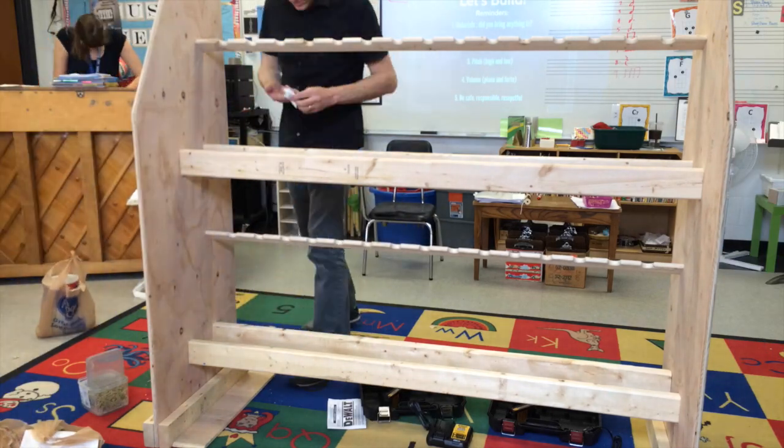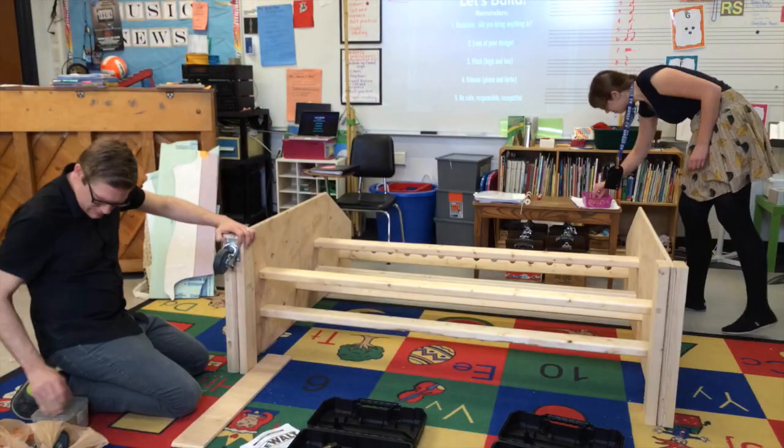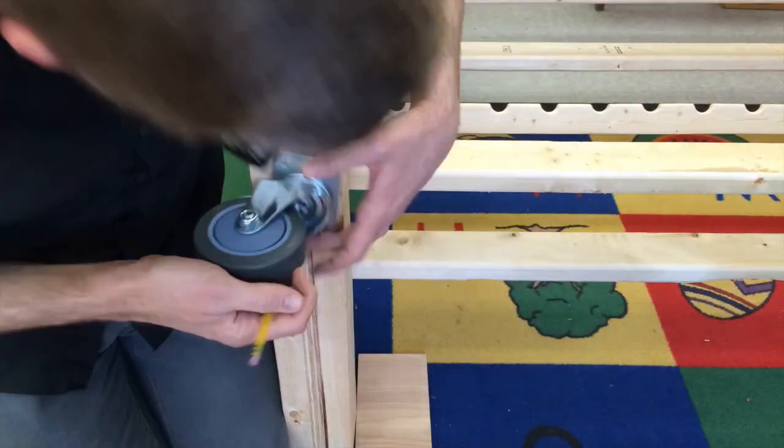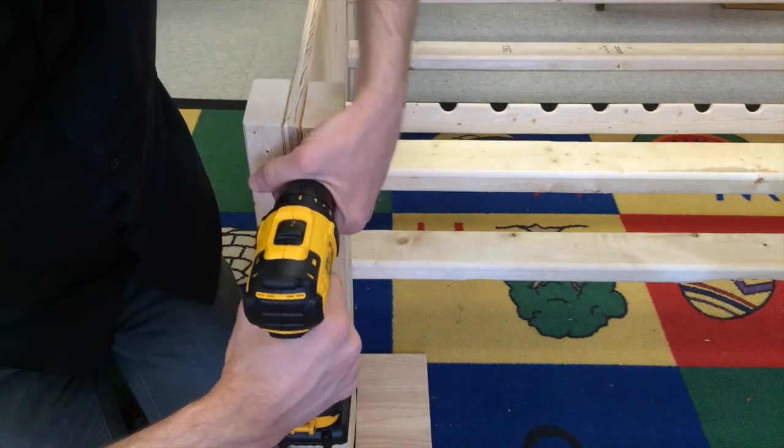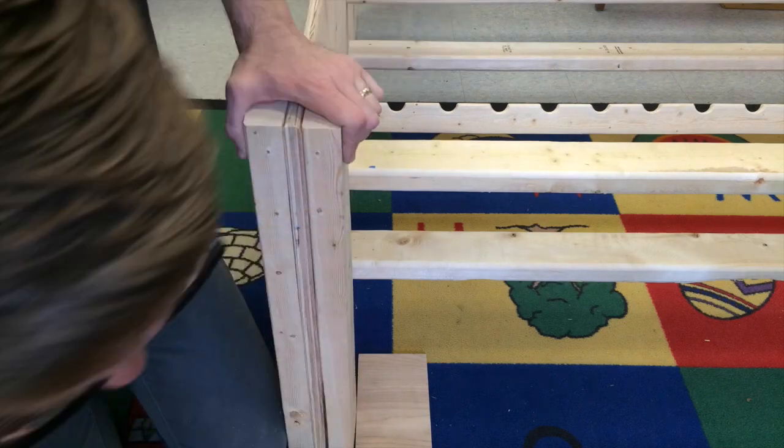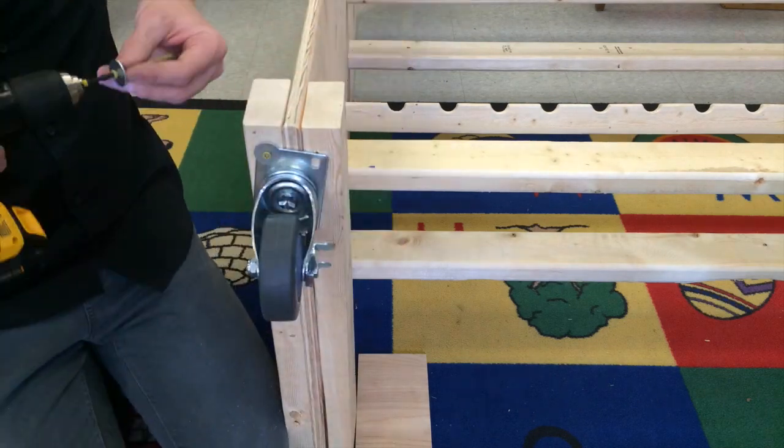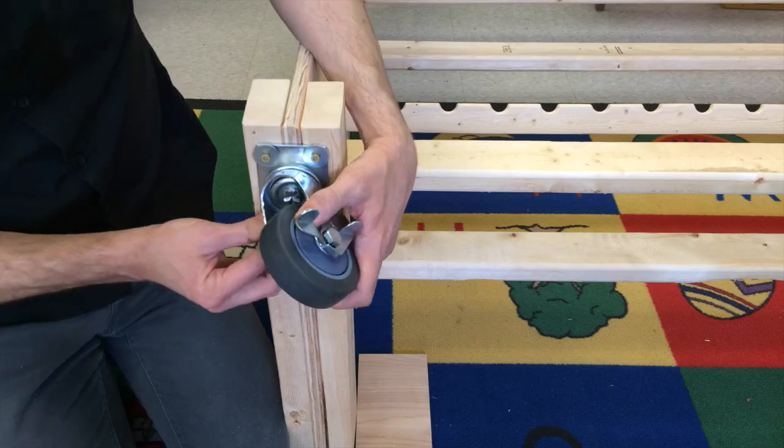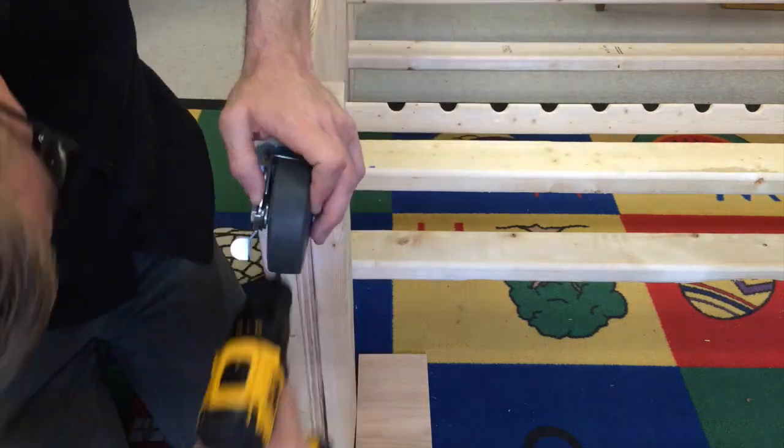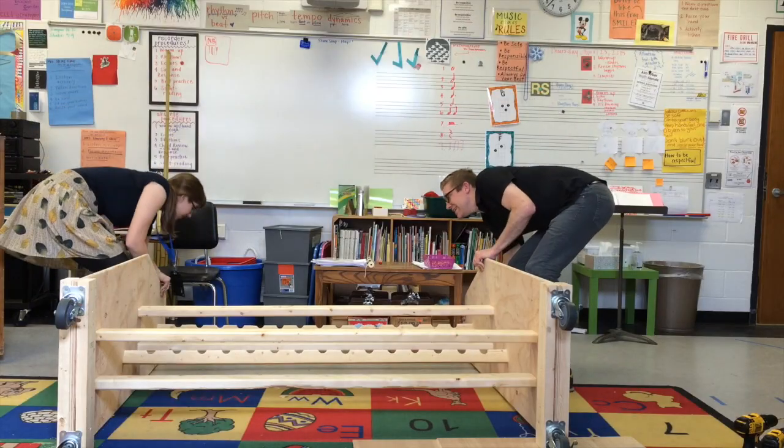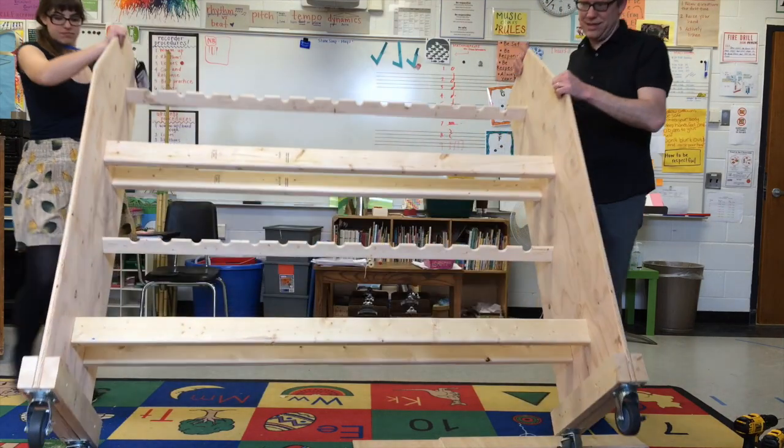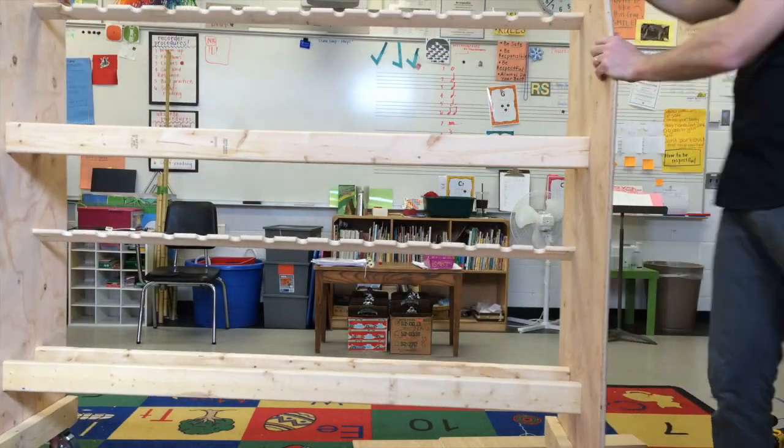After getting all the rails mounted, we could flip that over onto its back and add the casters. And like I said, these are really important because they allowed this cart to be mobile, and in a relatively small classroom space, that's really important. So I got those marked and had pilot holes drilled out and then attached them with screws and some washers. And then the moment of truth, we could finally tip it up and see the finished product. Perfect.